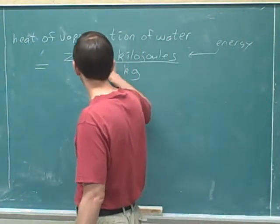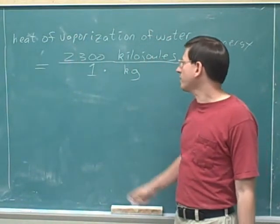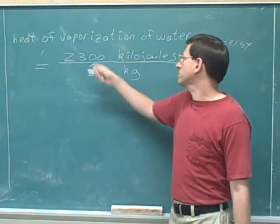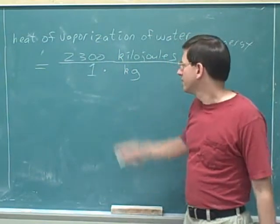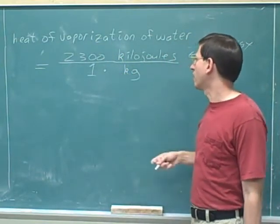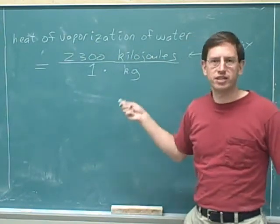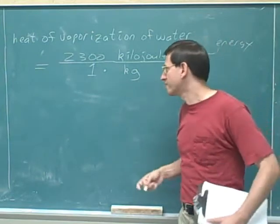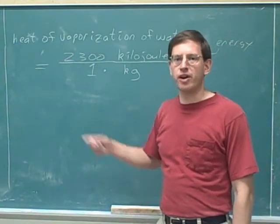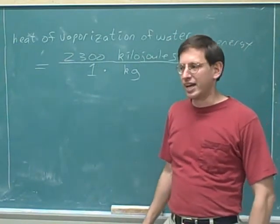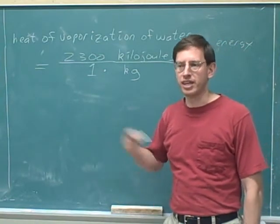What it tells us is that if we had 1 kilogram of water, it would take 2,300 kilojoules of energy to vaporize it. Vaporizing something basically means making it evaporate or boiling it. You already know that it takes energy to vaporize something — for example, if you want to boil a pot of water, you have to put it on the stove and add energy by turning on the heat.